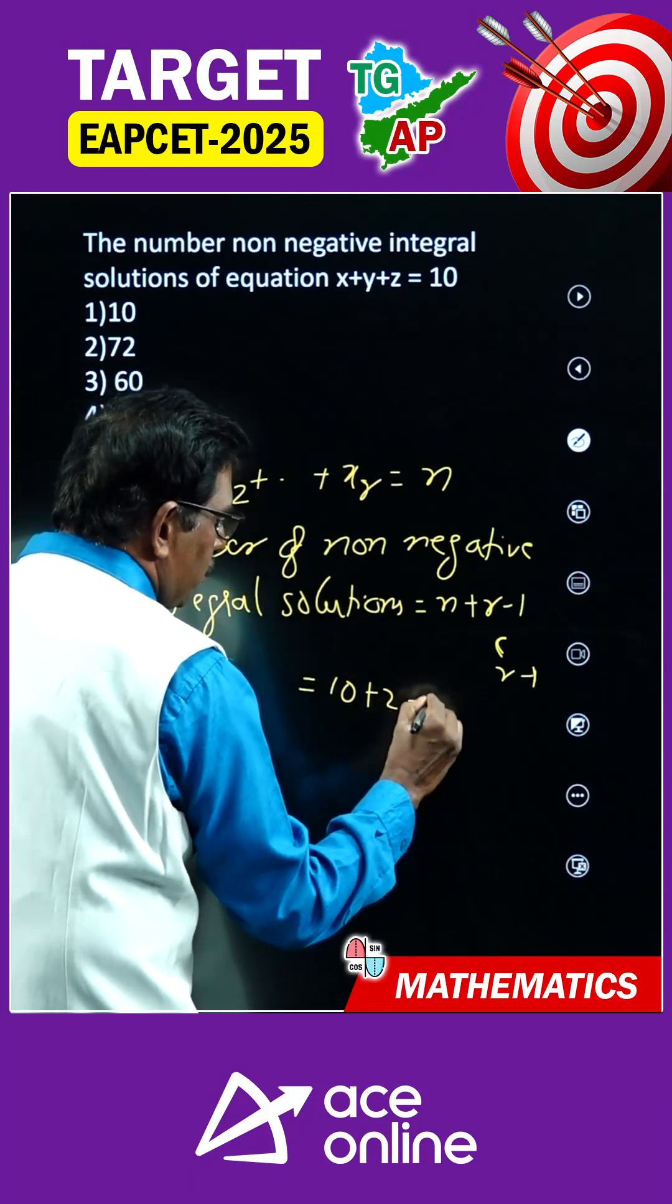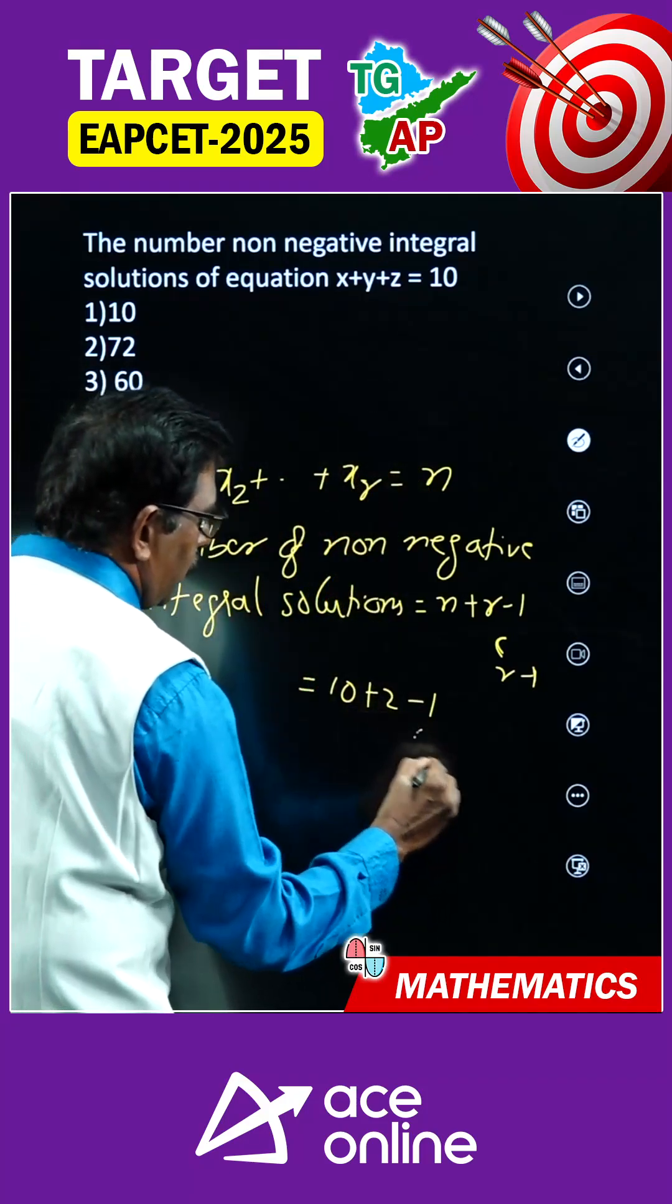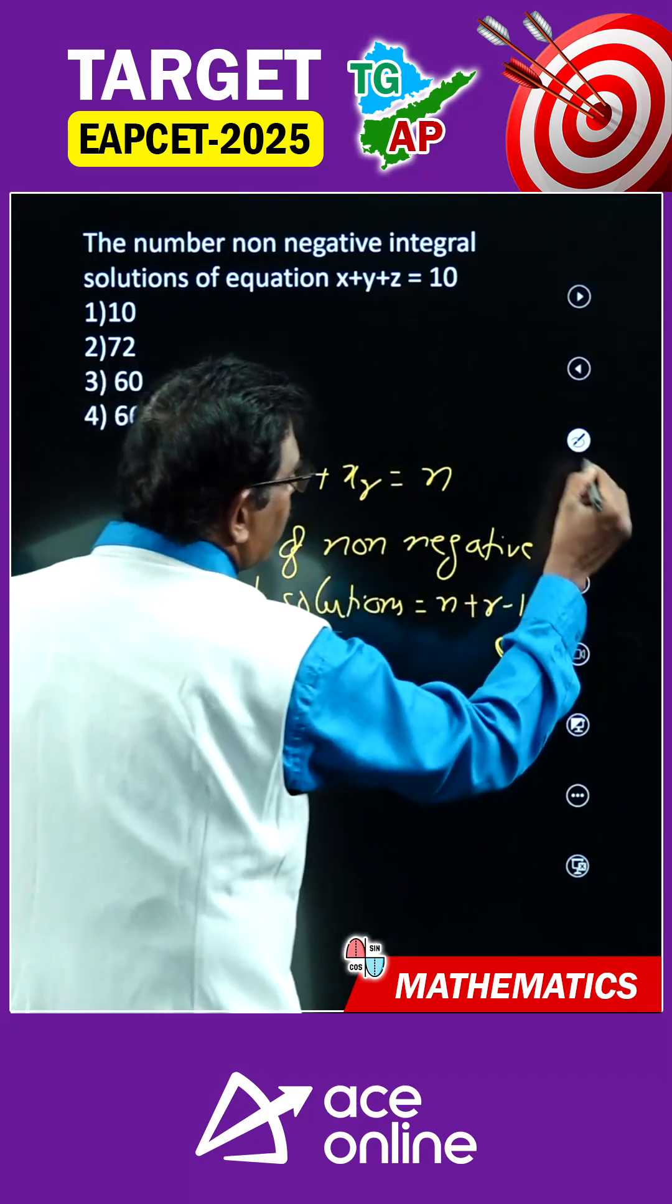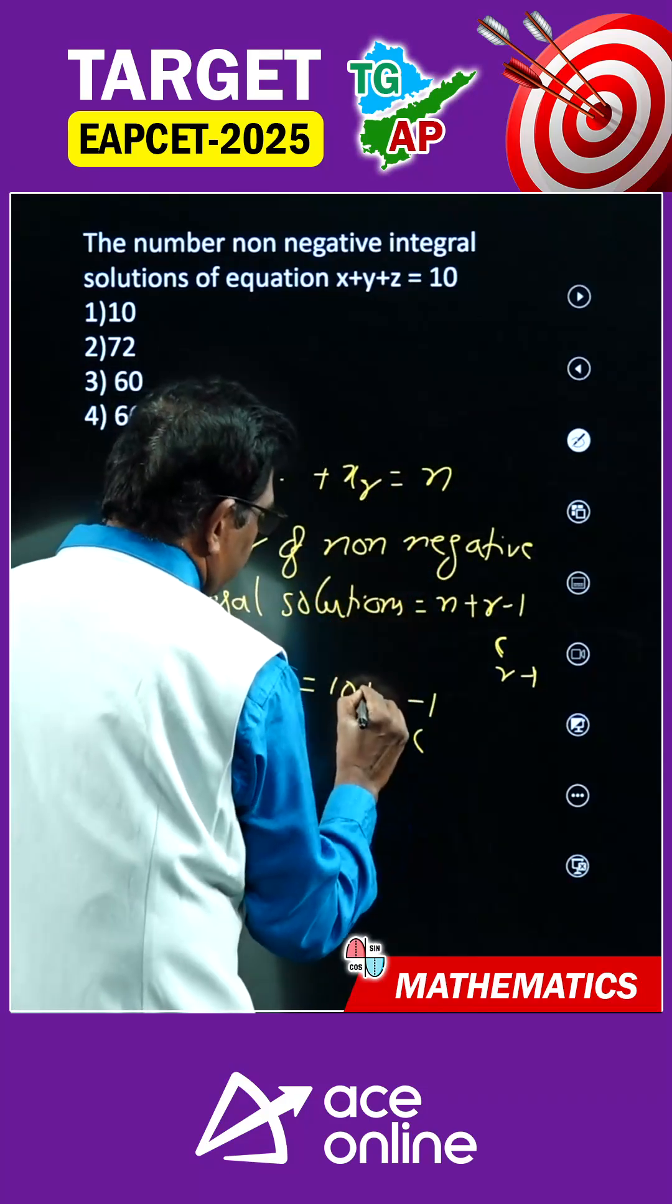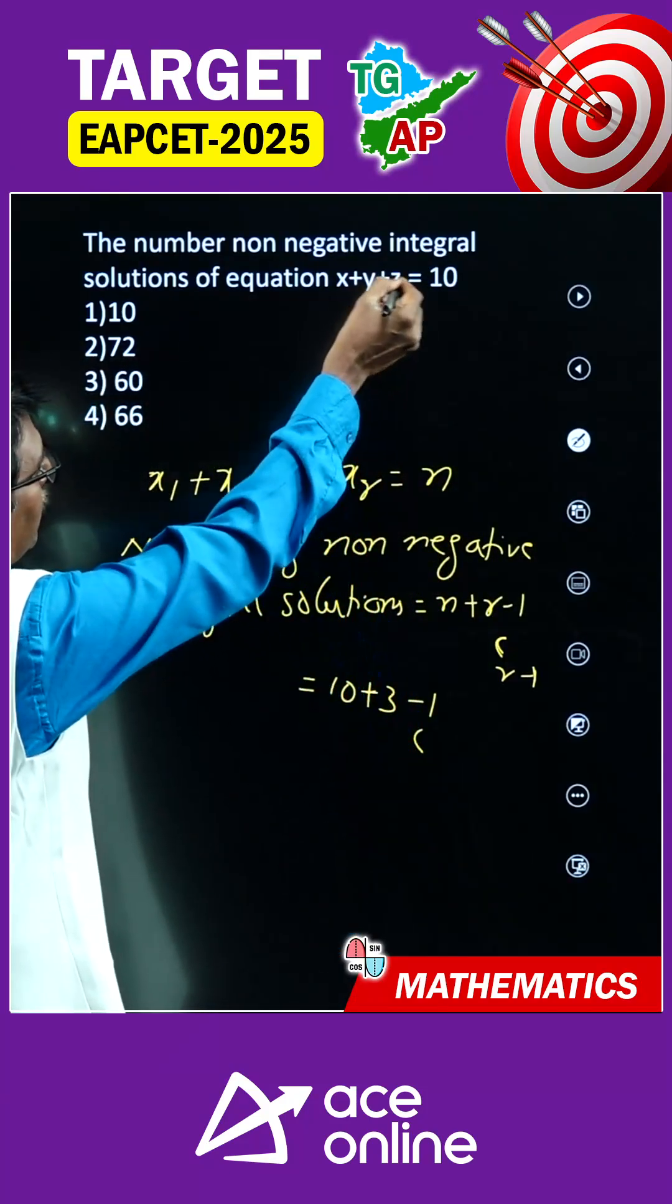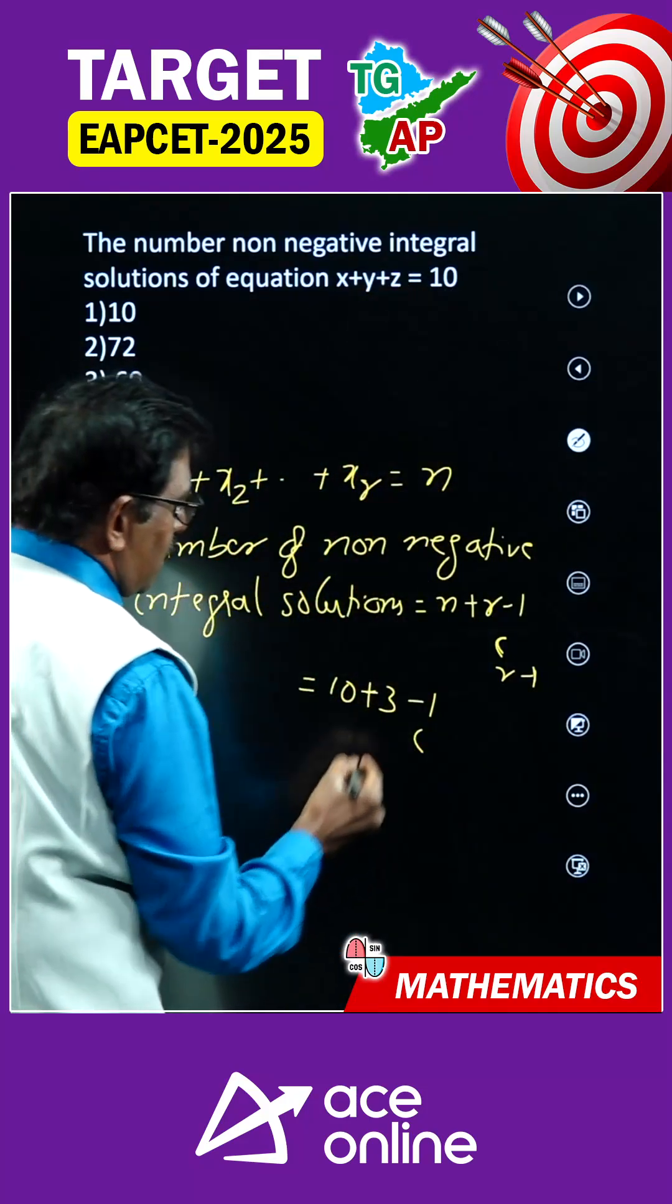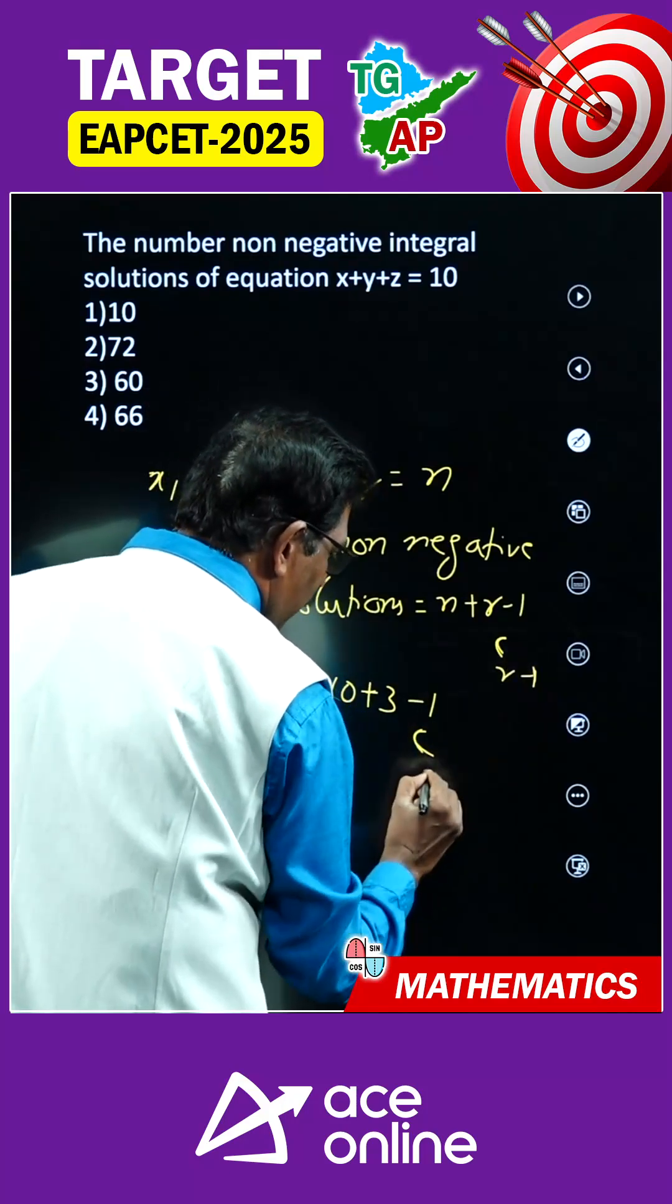10 plus 2 minus 1, c. 10 plus 3 is equal to - r plus 3 is equal to 3. In place of r, 3. So n is 10. 10 plus 3 minus 1, c, 3 minus 1.